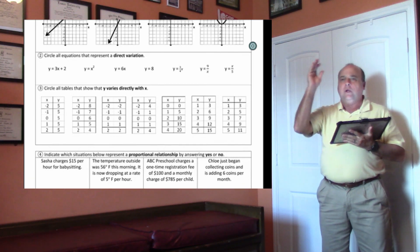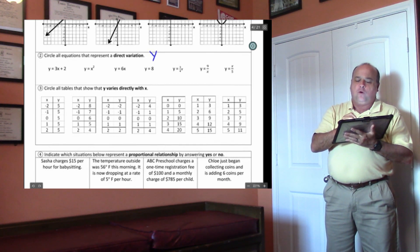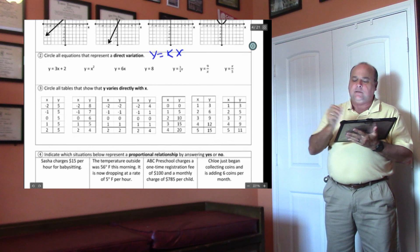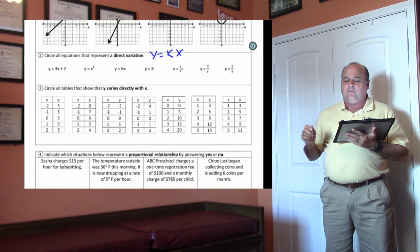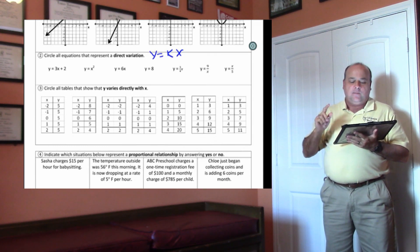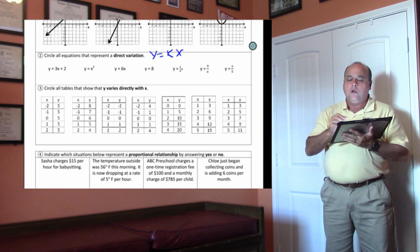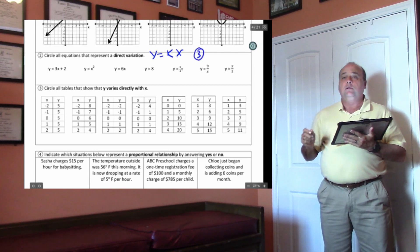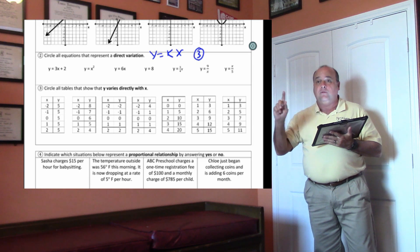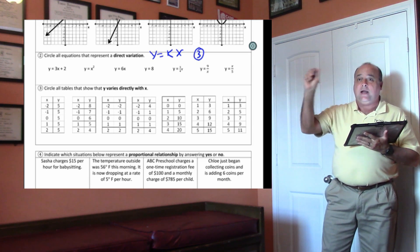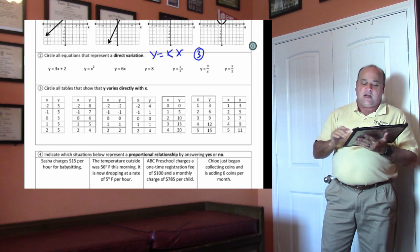Go to number two. On number two, the equation must be in the form y equals kx. It must be in the form y equals kx. There are one, two, three of them that work. Three of those equations can be written as y equals kx. The others cannot.